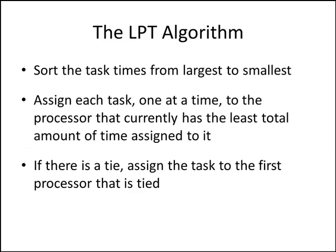Now let's look at the longest processing time algorithm. First of all, we're going to sort the task times from largest to smallest. Then we'll assign each task, one at a time, to the processor that currently has the least total amount of time assigned to it.